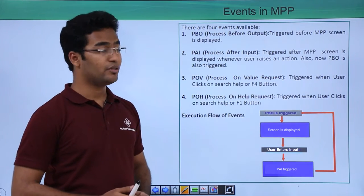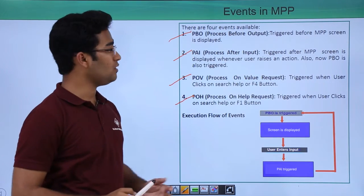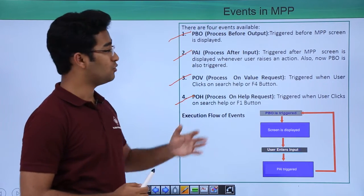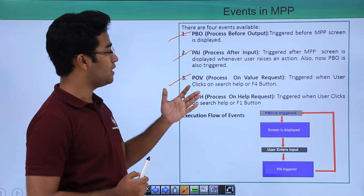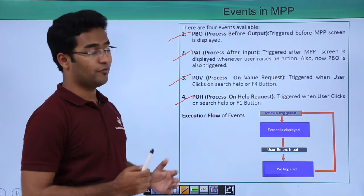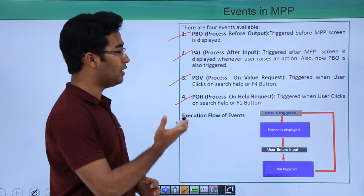Then we have some events in MPP that is PBO, PAI, POV and POH. PBO means process before output. This triggers before the MPP screen is displayed. And then there is PAI that is process after input which is triggered after the MPP screen is displayed and whenever user raises an input action.